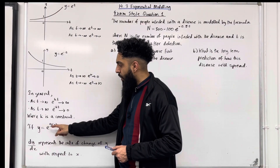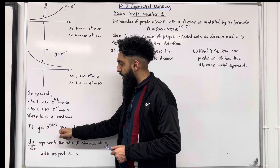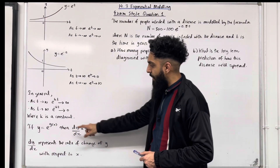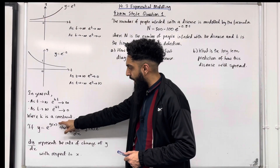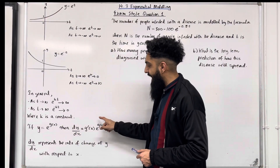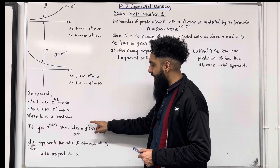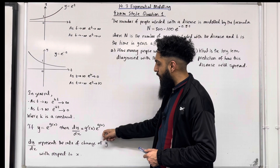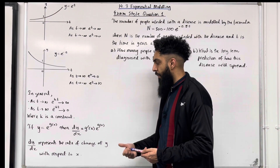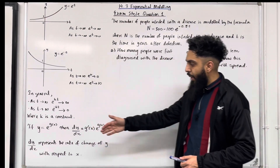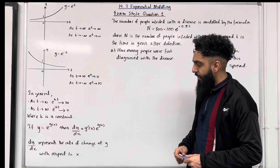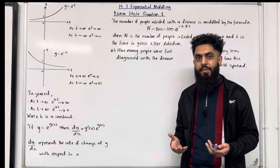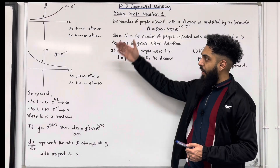Now, if y = e^(g(x)), then dy/dx is calculated by differentiating the power and bringing it down, so we get g'(x) · e^(g(x)), the original power. dy/dx represents the rate of change of y with respect to x. These are all the key facts we're going to be implementing within exam-style questions for 14.3 exponential modelling.